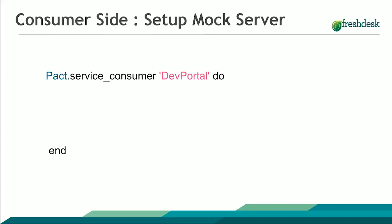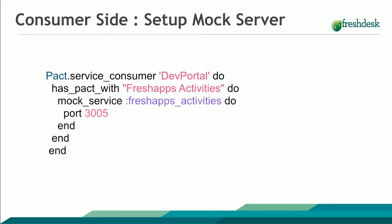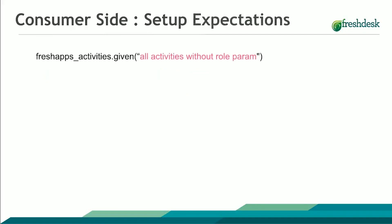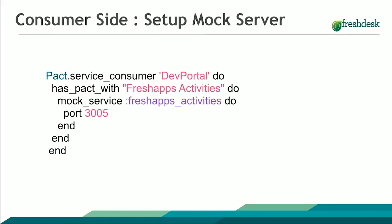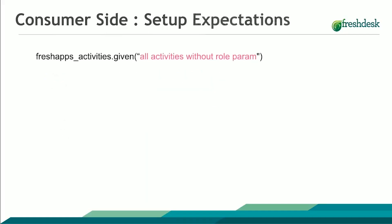This is the service consumer — the Dev Portal — and it actually has a pact with Activities, which is its provider. And the mock service of Activities is started on port 3005.